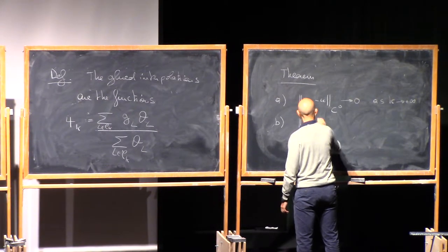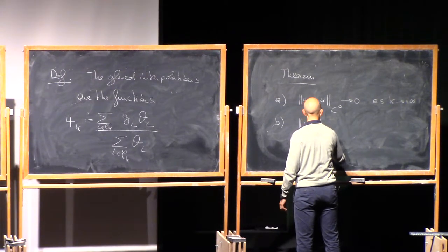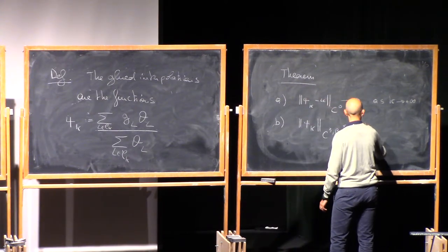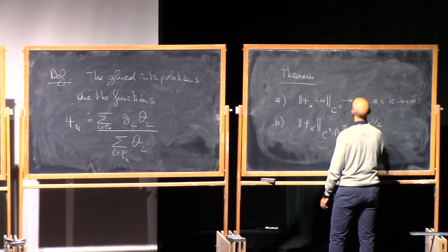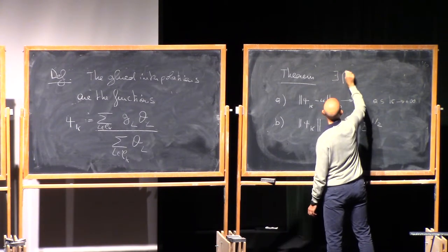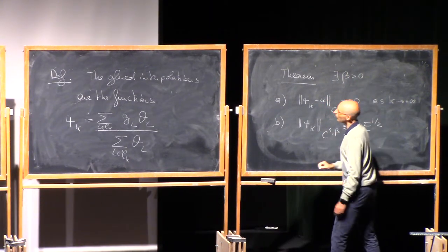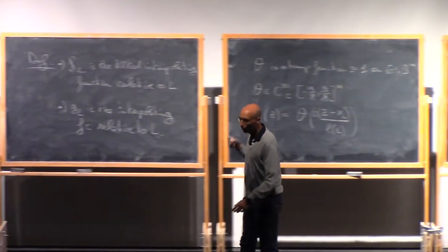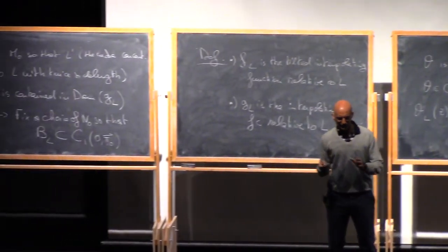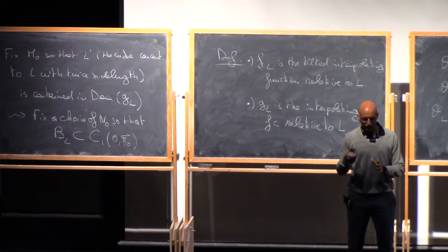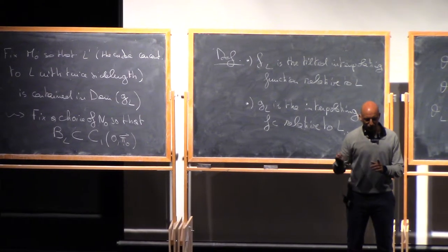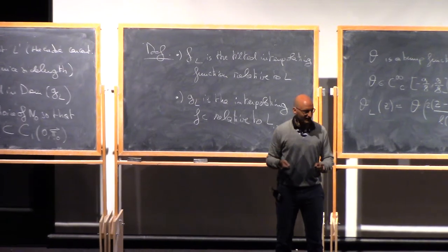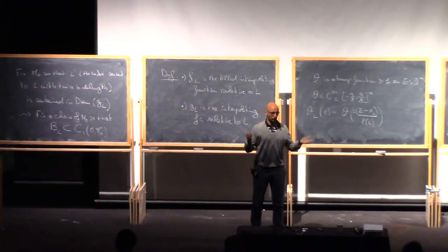The non-obvious thing is that we have uniform C^{3,β} estimates on these approximating functions. Then the C^{3,β} regularity of u is simply an effect of passing to the limit in the approximations ψ_k. So ‖ψ_k‖_{C^{3,β}} ≤ C · E^{1/2}, with a constant independent of k. There exists β > 0 related to the earlier 2+2β. If lucky, this β equals that β; if not, we might lose a factor.